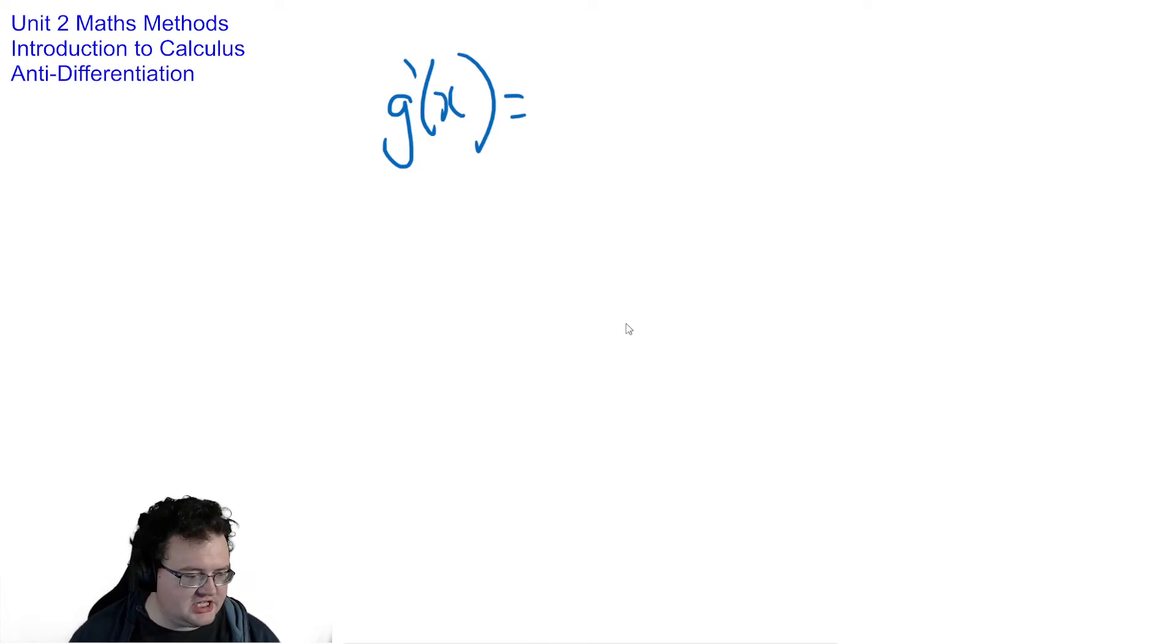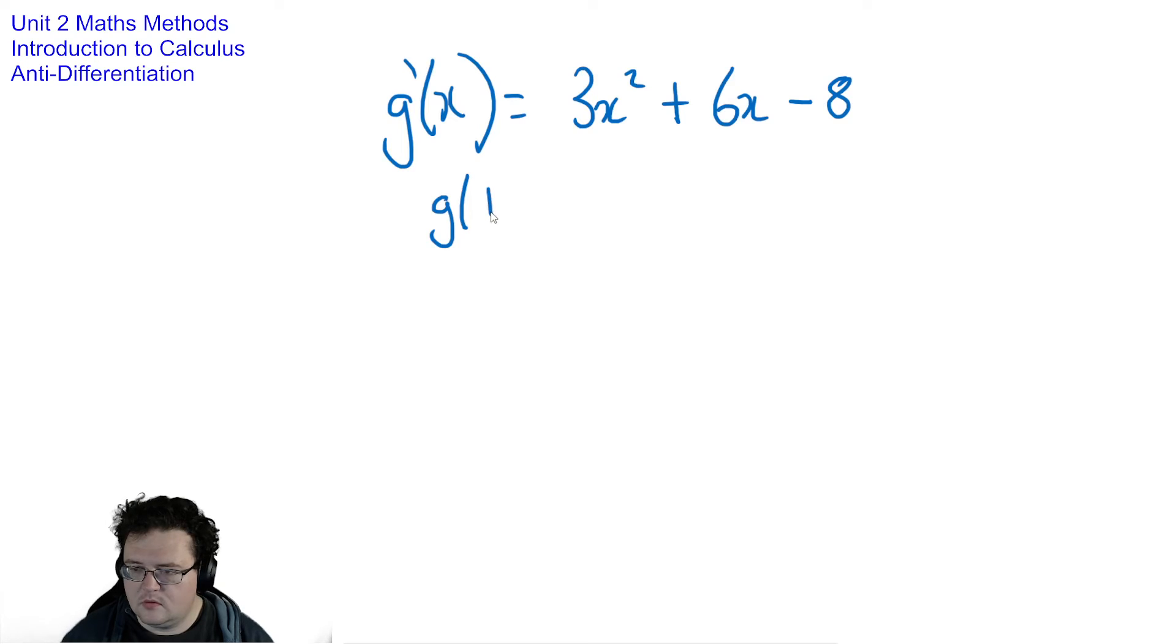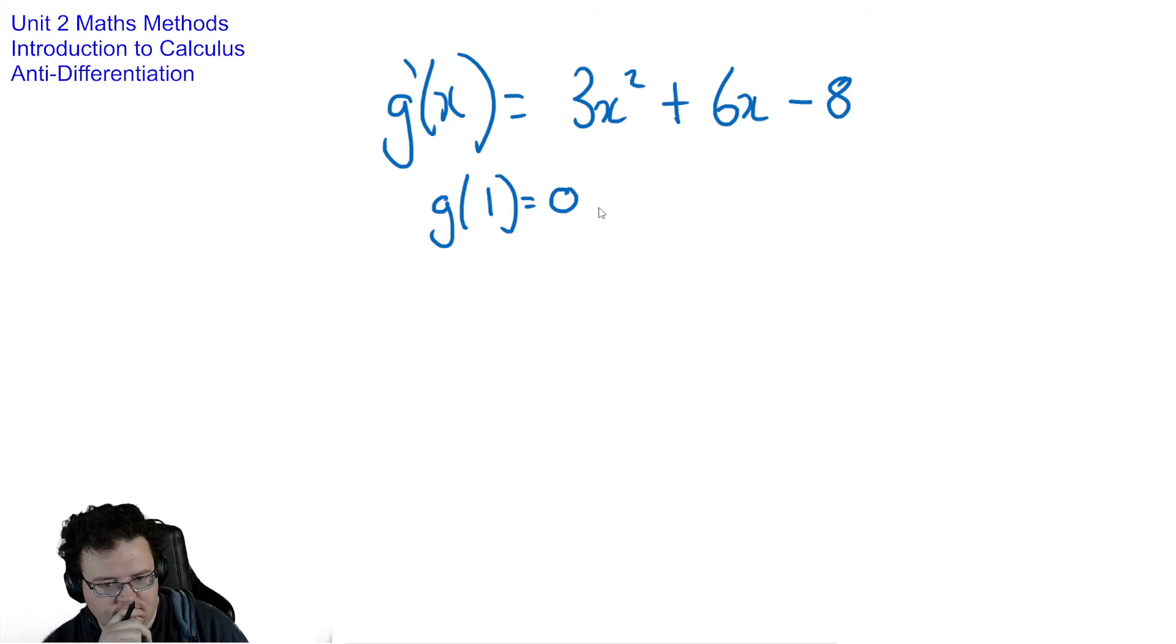So I'm going to start with g dash x and this time I'm going to start with that. And what I also know about the equation is that g of 1 equals zero. I have two pieces of information to work with here.